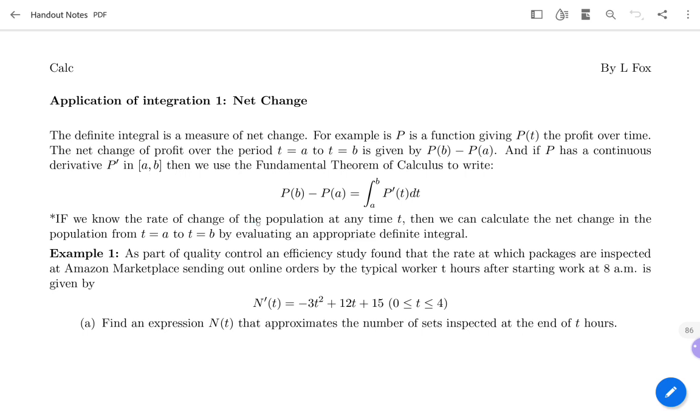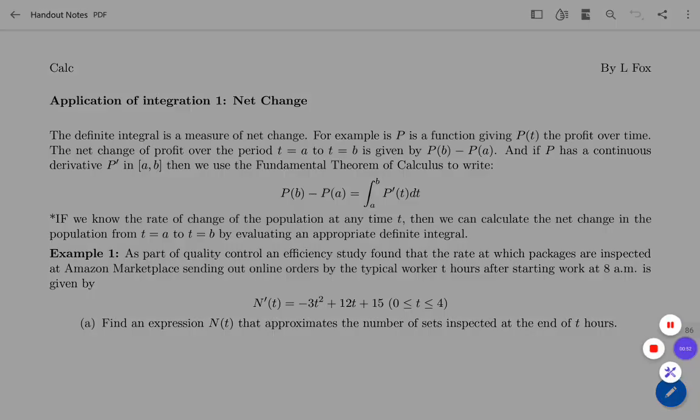As long as we know a rate of change of a population or anything at any time, we can integrate to calculate the net change. So it could be a population, it could be profit, it could be anything. If you know a rate of change, you can find net change.